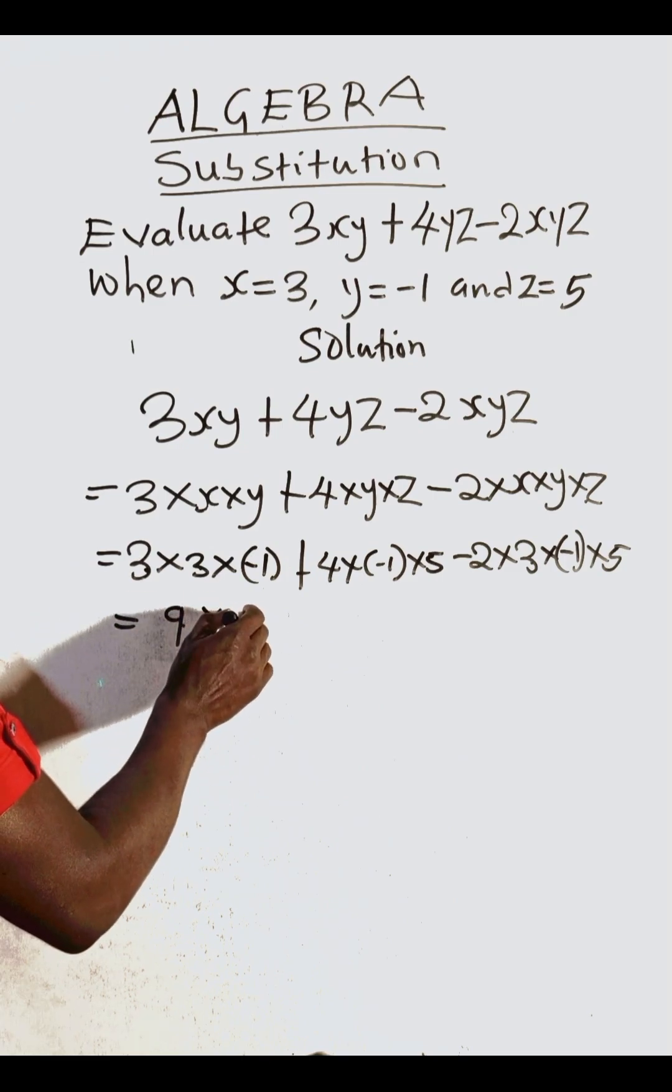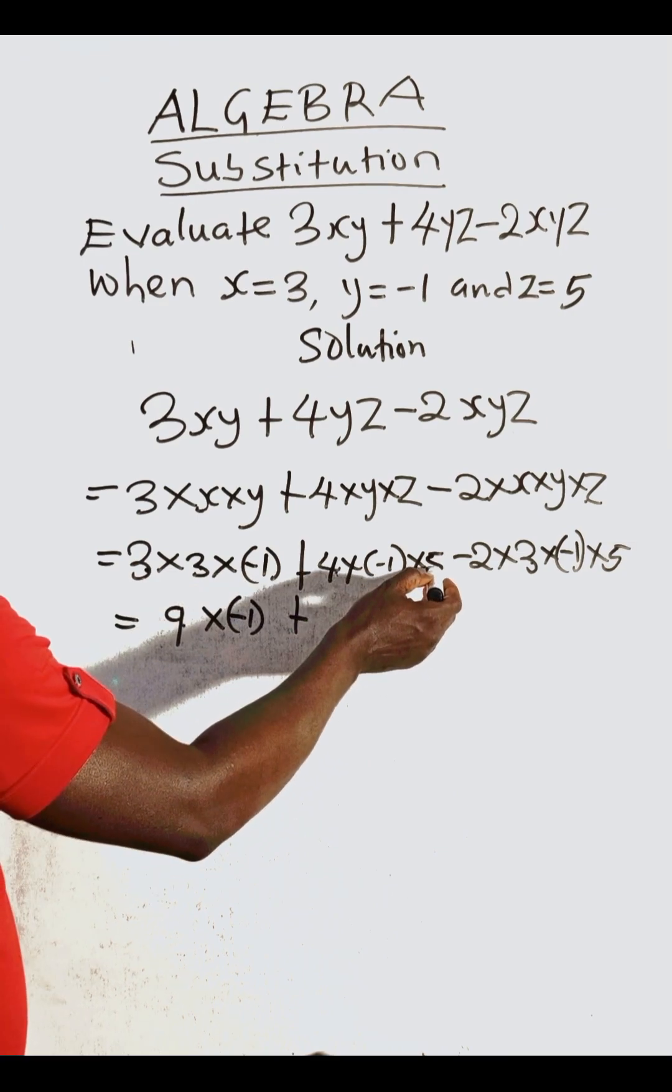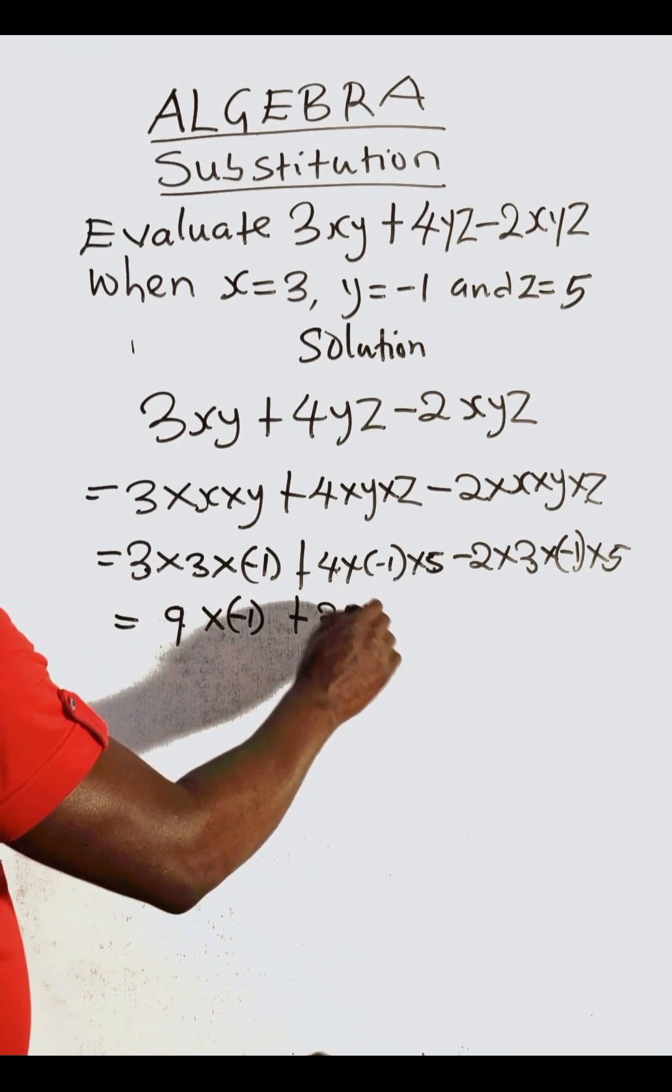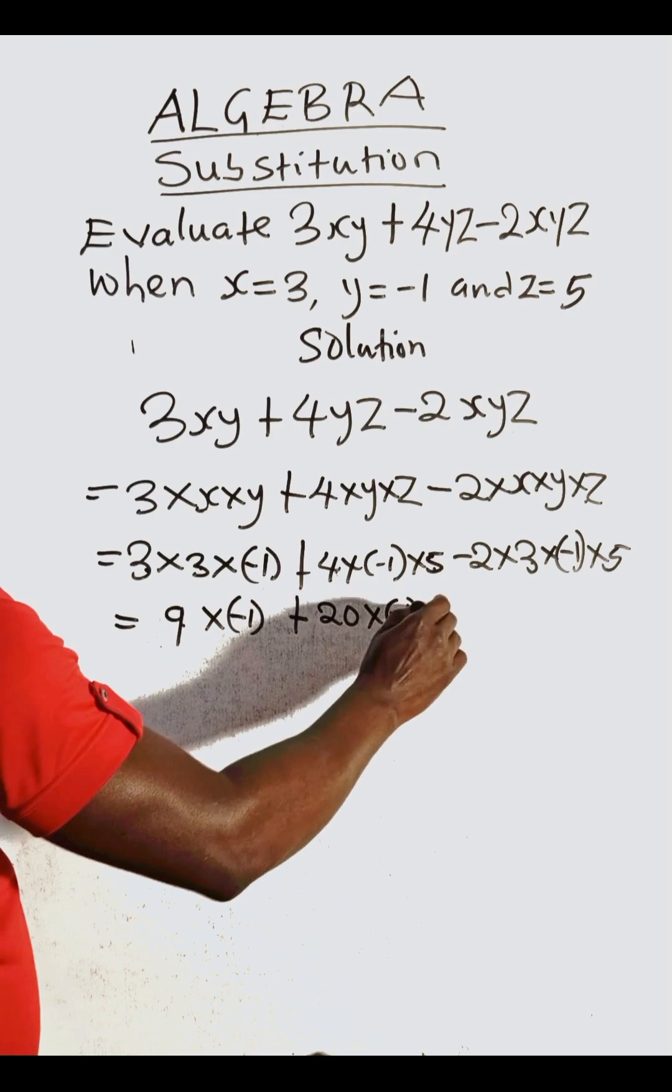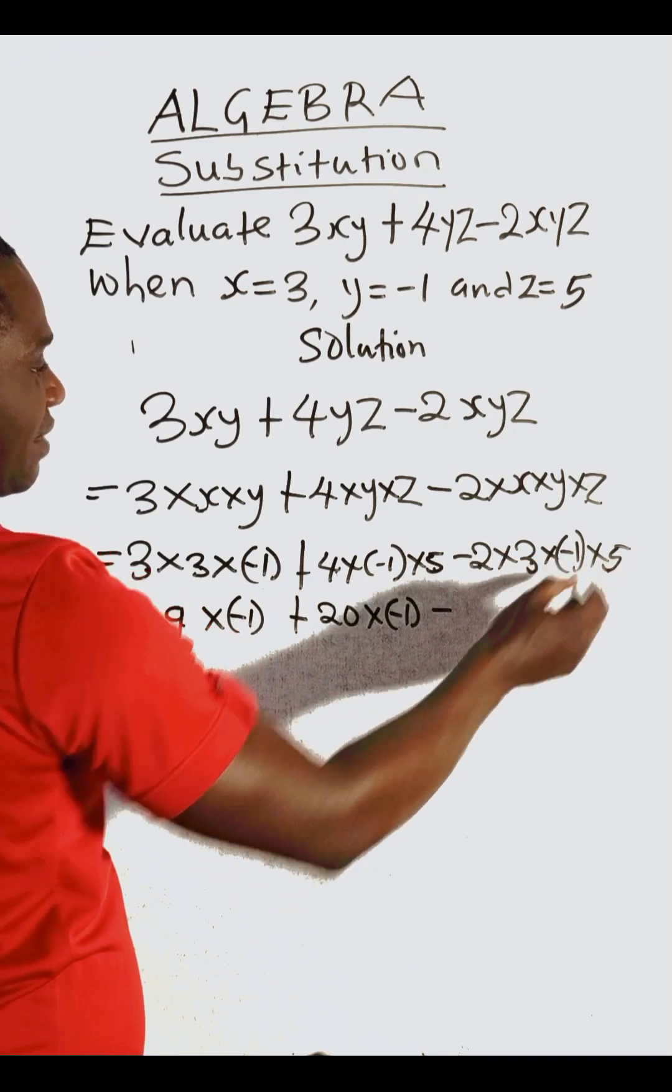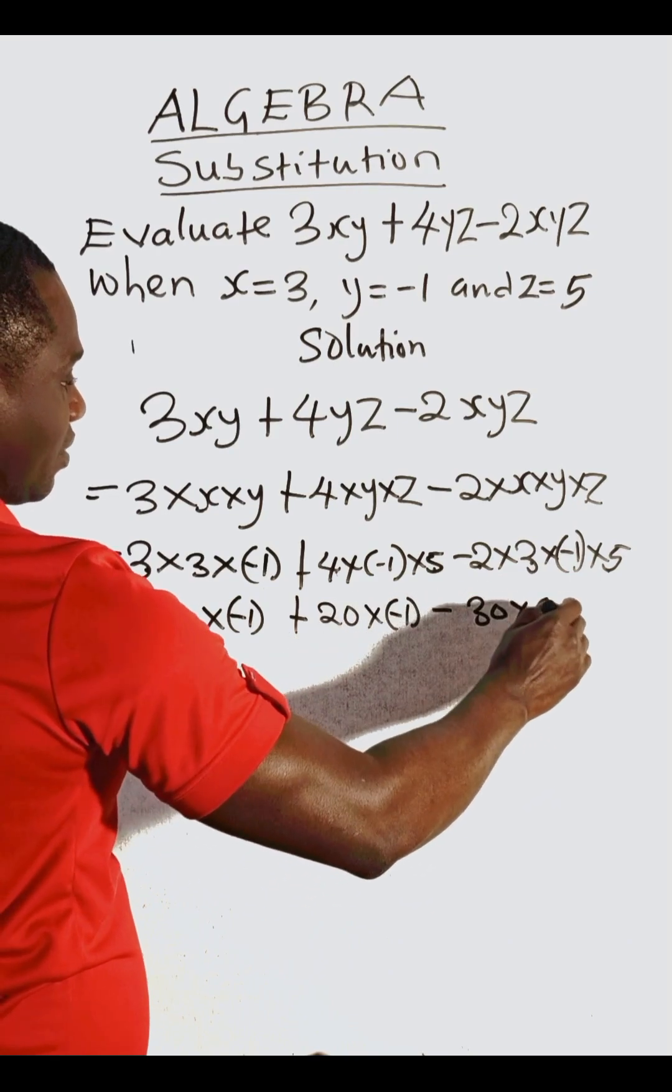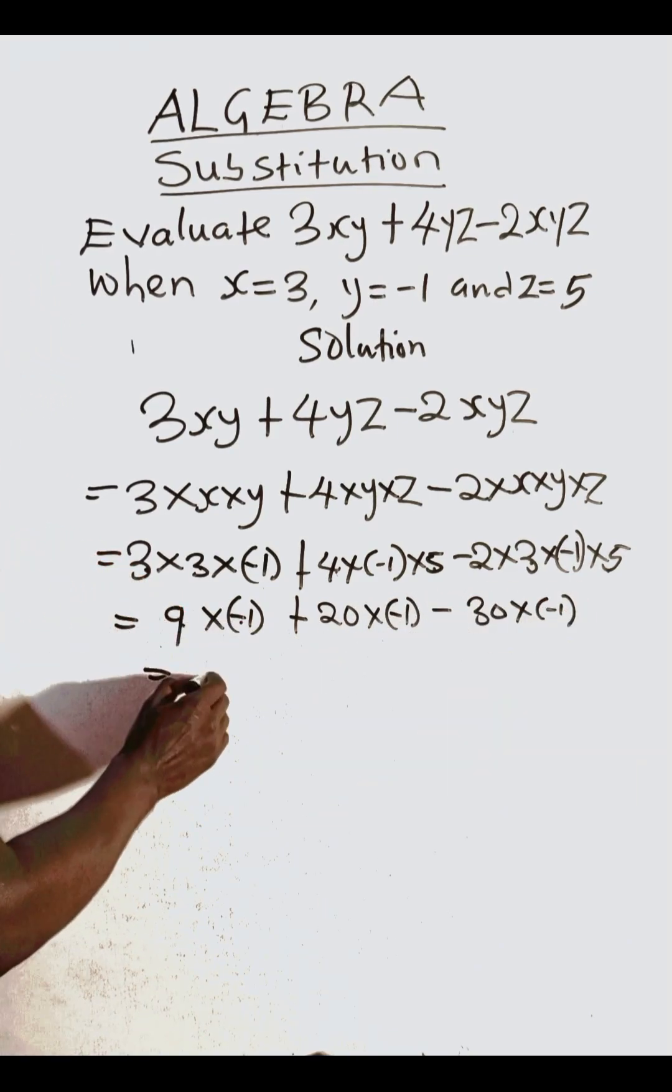Three times three is nine, so we'll write nine times minus one here. Then four times five is twenty, so twenty times minus one here. Then two times three times five is thirty, so we'll have thirty times minus one here.